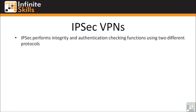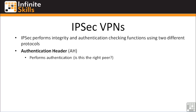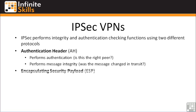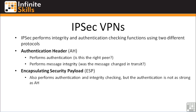IPsec performs integrity and authentication checking using two types of protocols. The first is the Authentication Header, or AH, which performs authentication — confirming you're talking to the right peer — and message integrity, checking whether the message was changed in transit. The complementary function is Encapsulating Security Payload, or ESP. ESP can also perform authentication and integrity checking, though not as strongly as AH. However, ESP performs the payload encryption. In practice, most IPsec VPN tunnels run both AH and ESP: AH handles authentication and integrity, while ESP does the heavy lifting of encryption and decryption.